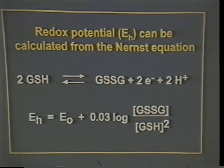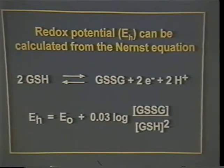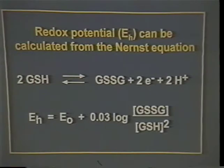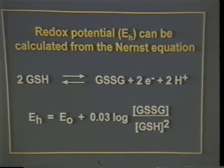You don't need to remember the equation, but you need to remember the principle: it's a mathematical expression, a way to quantify the reducing power of the glutathione system - a single quantifiable parameter much in the same way as pH is used to express the tendency of a molecule to accept or donate protons.